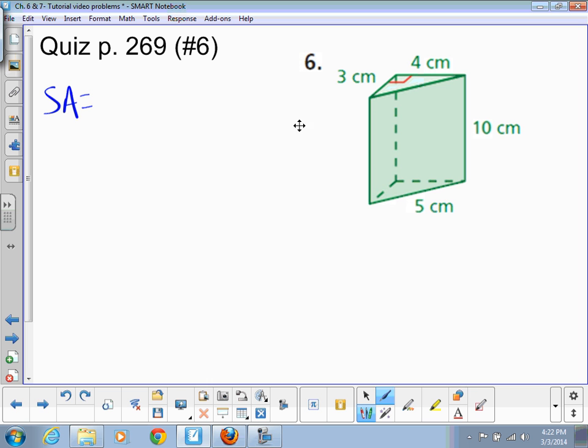So the area of the top is 6 square centimeters, which means the area of the bottom is 6 square centimeters. Now I'm going to look at the front. The front is a rectangle that is 5 centimeters by 10 centimeters. 5 times 10 makes 50.